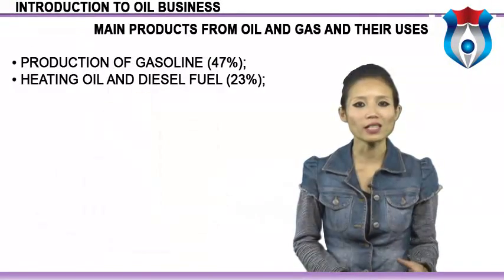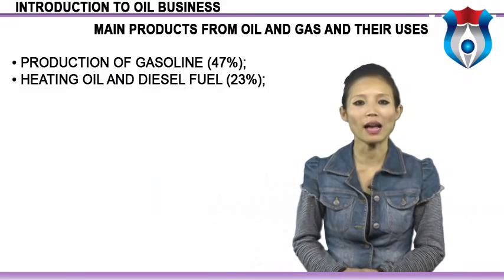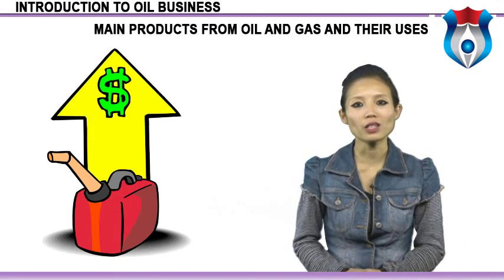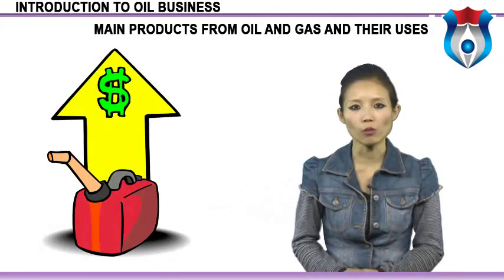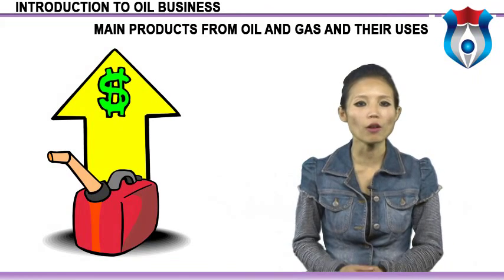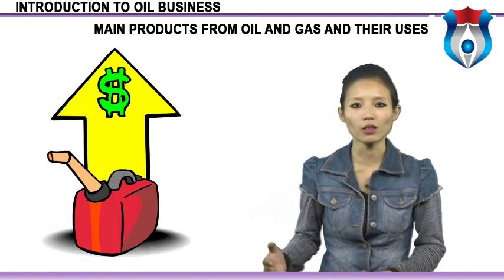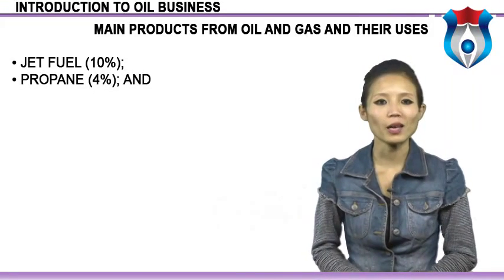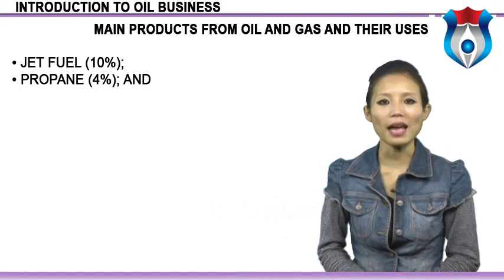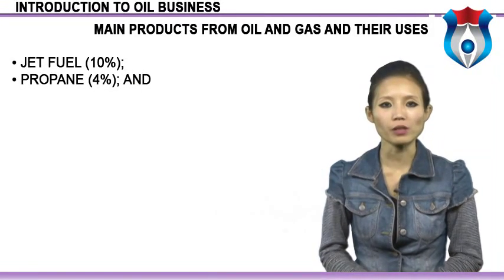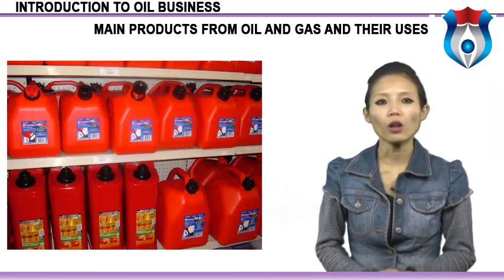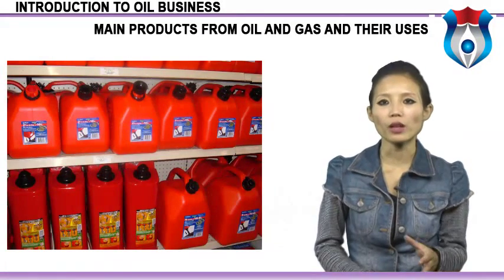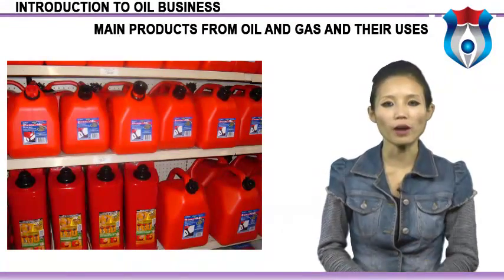Production statistics: gasoline 47%, heating oil and diesel fuel 23%, petrochemical feedstock products derived from petroleum for the manufacturing of chemicals, synthetic rubber, and plastics 18%, jet fuel 10%, propane 4%, and asphalt 3%. The total is over 100% because there is more than a 5% processing gain from refining.